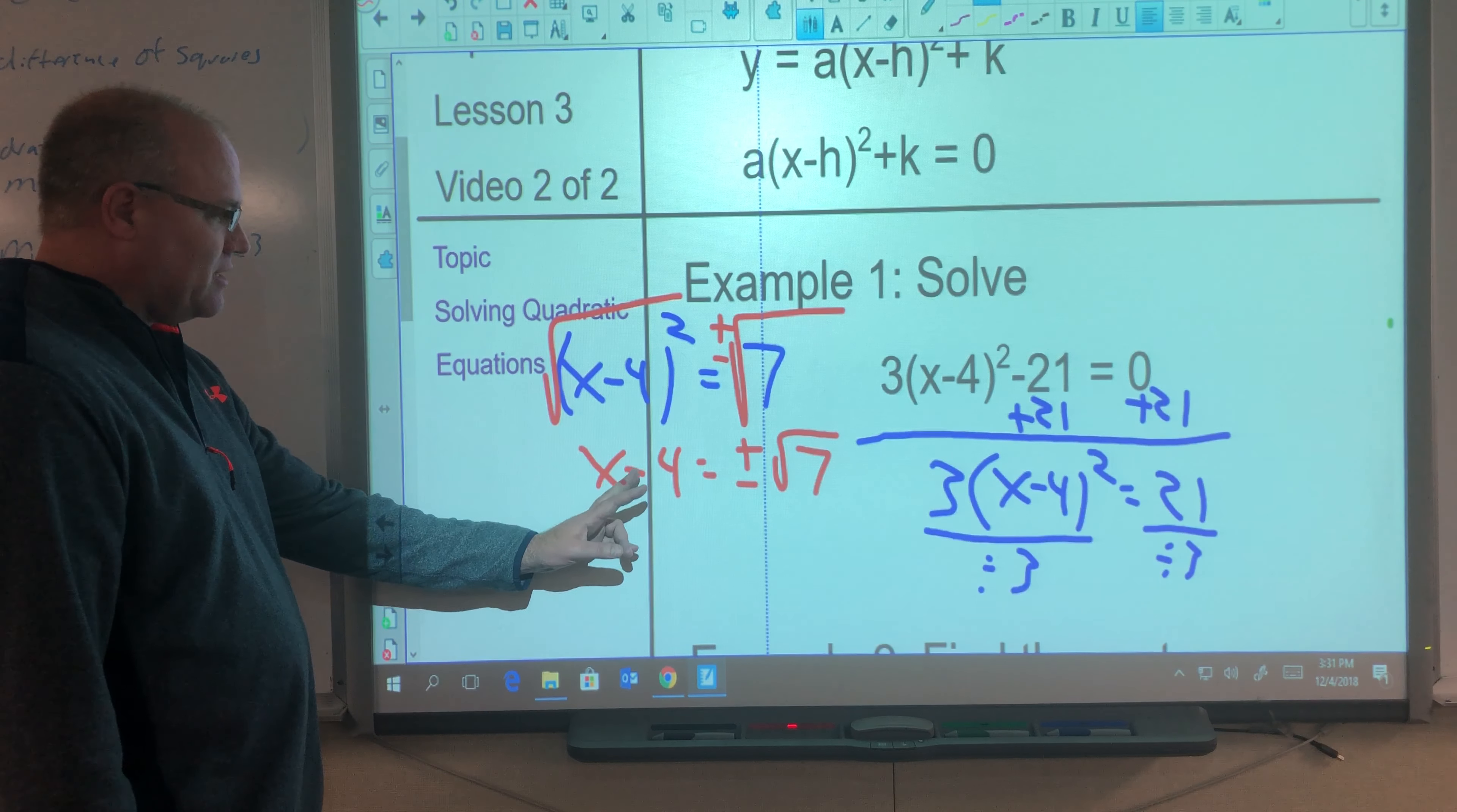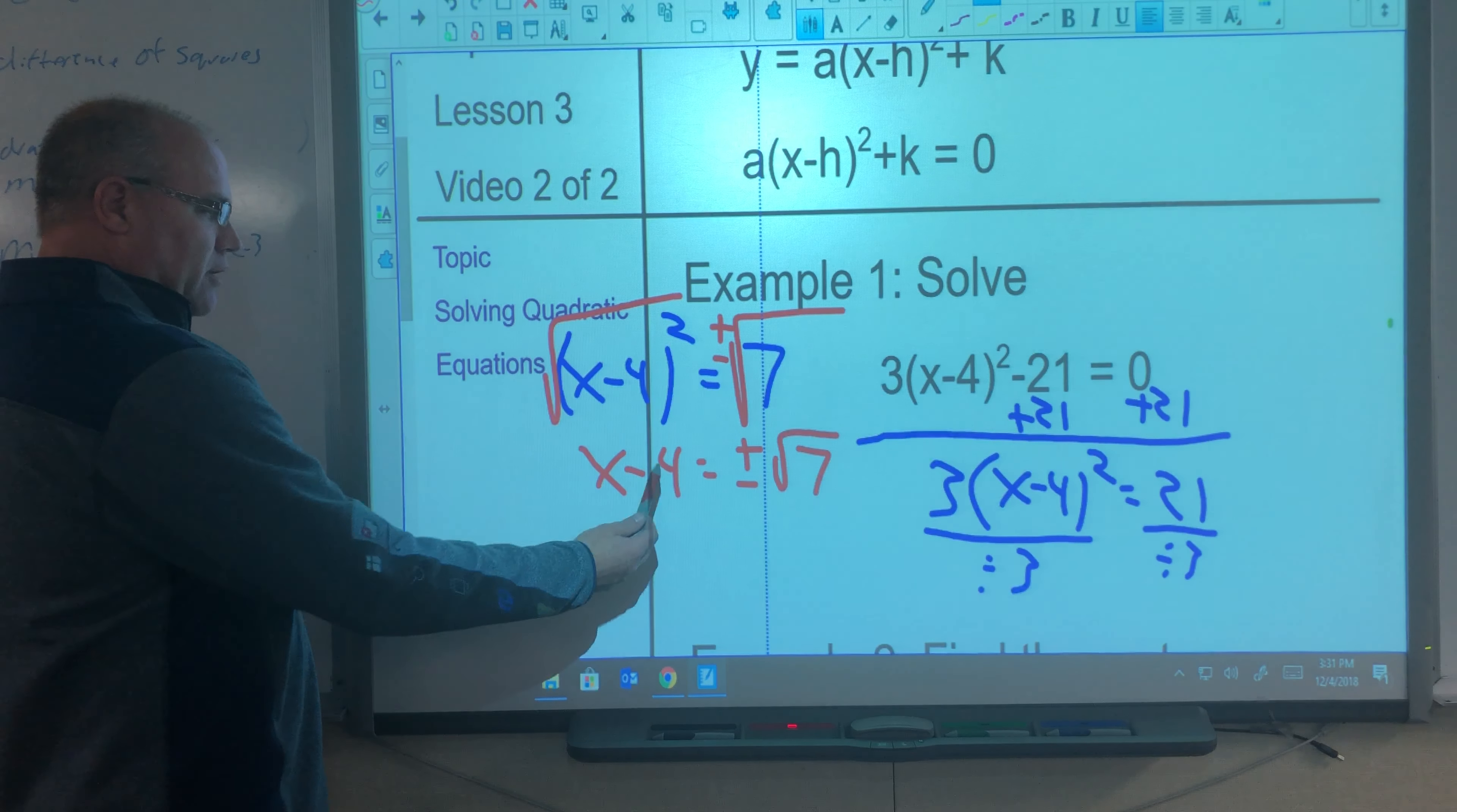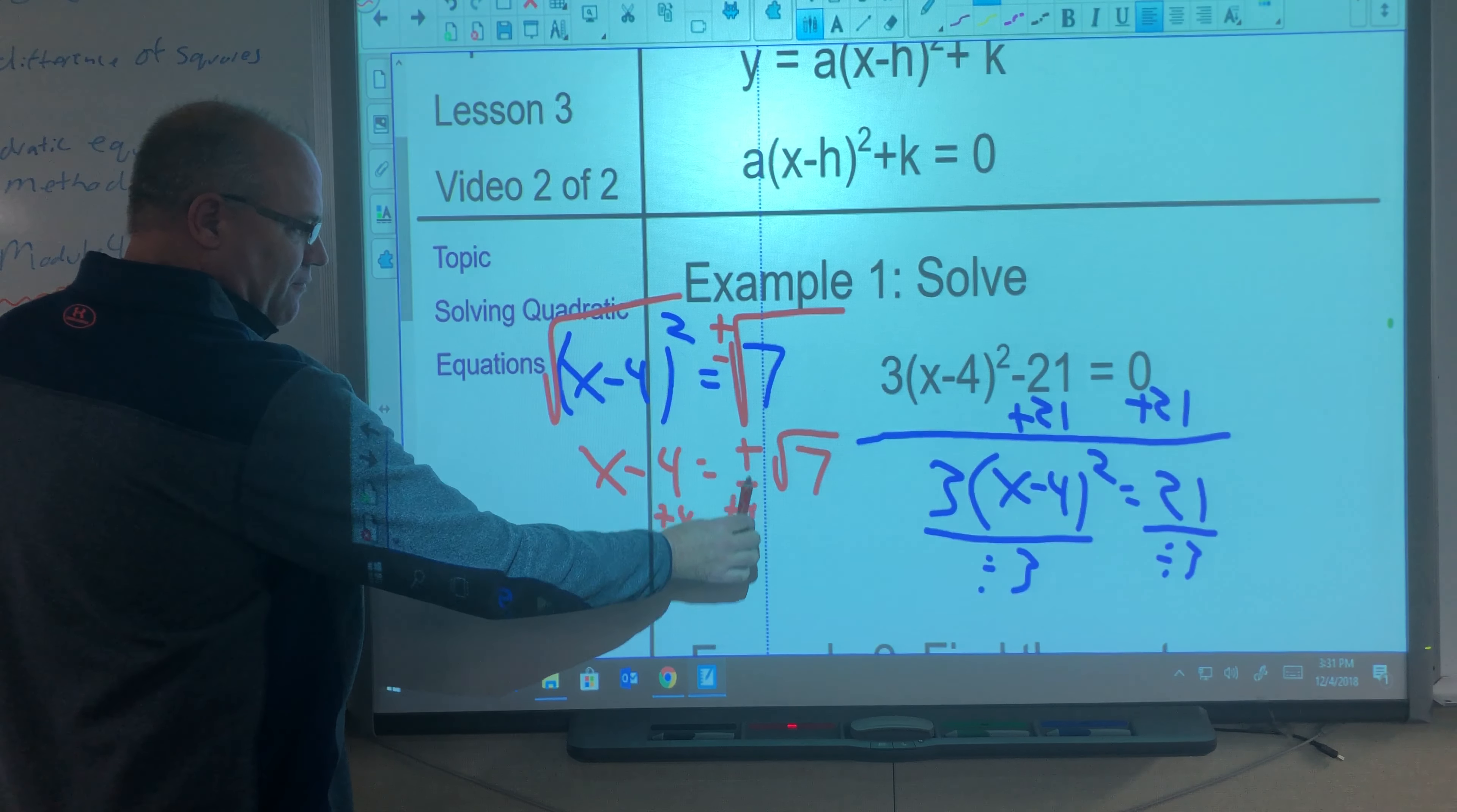Now I want to solve for x. I want to add 4 to both sides. I can't put the 4 with the square root of 7, right? Those are unlike terms. We have a whole number and a square root number, so I've got to keep them separate. So I'm going to go plus 4 plus 4 on the right side of the equal sign, but in front of the plus minus.